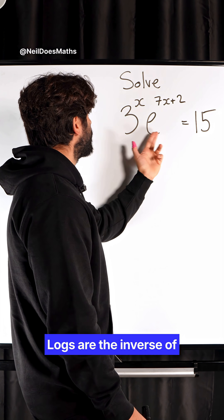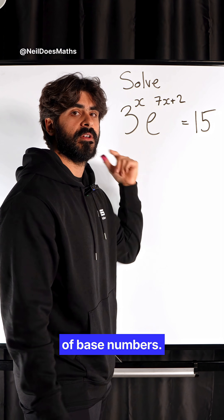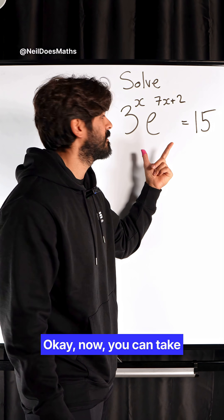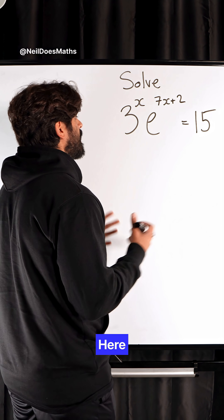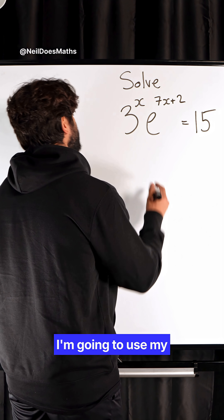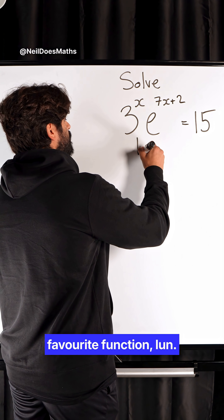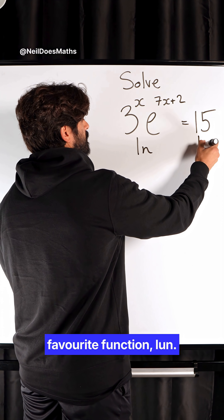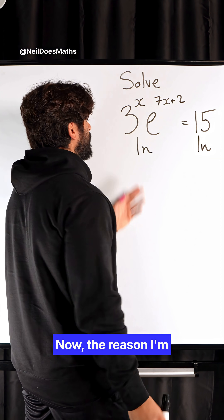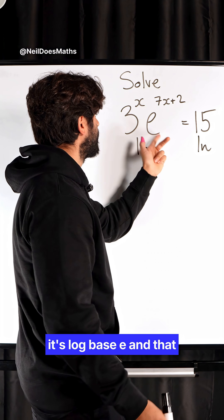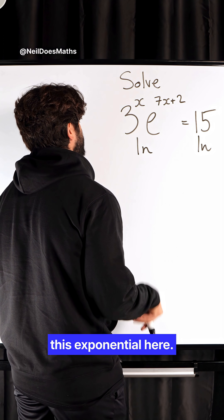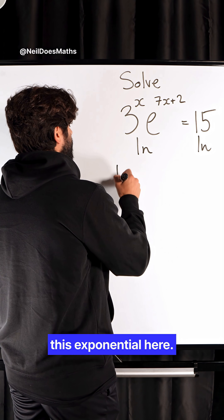Logs are the inverse of base numbers. Now, you can take any log you want. Here, I'm going to use my favourite function, ln. The reason I'm picking ln is because it's log base e, and that will help us cancel out this exponential here.